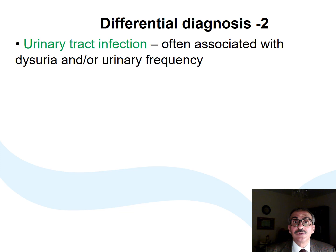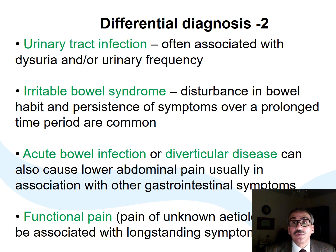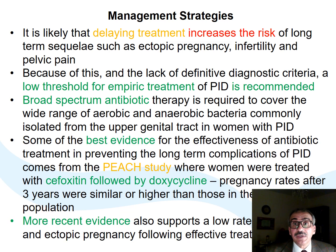Accurate history taking might help also in identifying ovarian accidents. Proper urinary history might help direct our thinking. Chronic and acute bowel problems and functional pain usually have long-standing symptoms. A low threshold to start empirical broad-spectrum antibiotics management is recommended. The PEACH study and more recent evidence provide good support for the beneficial effect of early start of cefoxitin followed by doxycycline in lowering the rates of post-infection infertility and ectopic pregnancy.